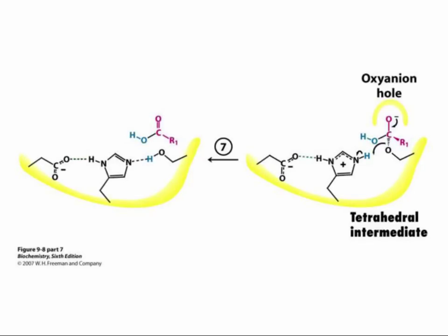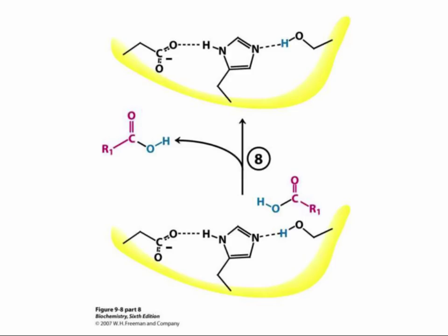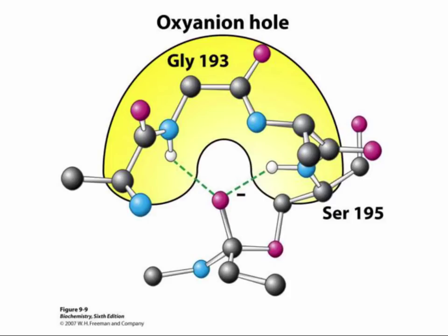In step seven, the second tetrahedral intermediate is attacked by a proton conveniently provided by the active site histidine residue. The anionic oxygen is converted to a carbonyl group and the attachment of the intermediate to the active site serine is broken. In step eight, the carboxylate product diffuses away and the enzyme reverts to its original state. The oxyanion hole is the place in the active site where a negatively charged oxyanion forms on the substrate — a highly unstable intermediate with a very high energy level.